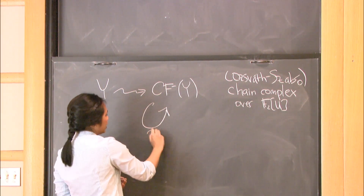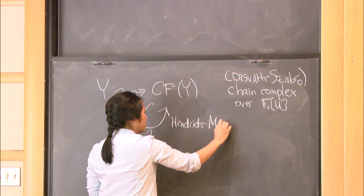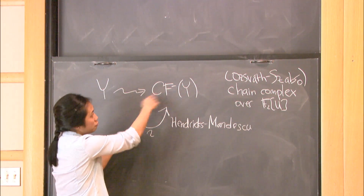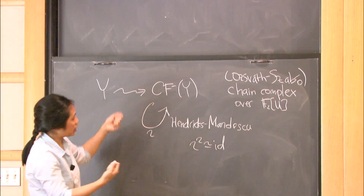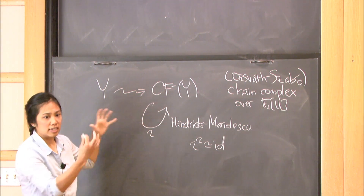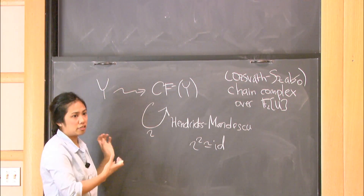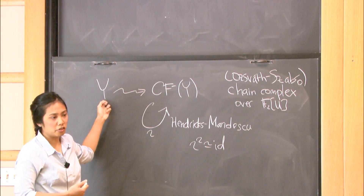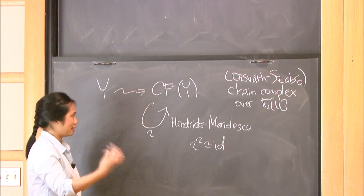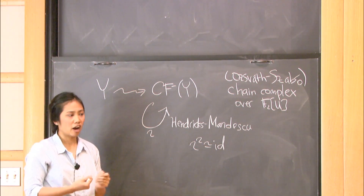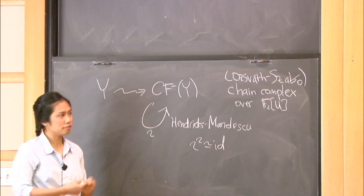Recently, Hendricks and Manolescu enhanced the data of the Heegaard Floer chain complex to give a map iota, which is an involution up to homotopy — so iota squared is homotopic to the identity. Together, the pair CF⁻(Y) with the map iota is an invariant of the three-manifold containing powerful information about its topology. In particular, you can extract information about the homology cobordism class of the three-manifold by studying this pair. In our proof, we do an intricate study of the involutive Heegaard Floer chain complexes — the pairs CF⁻ and iota — in order to construct an infinite family of homomorphisms from θ³_Z to the integers.